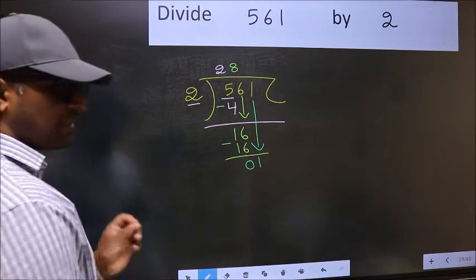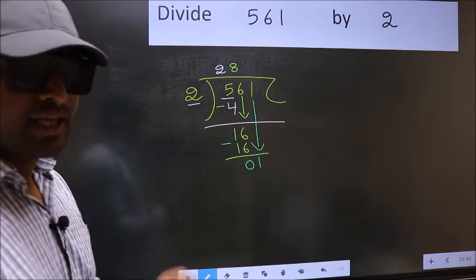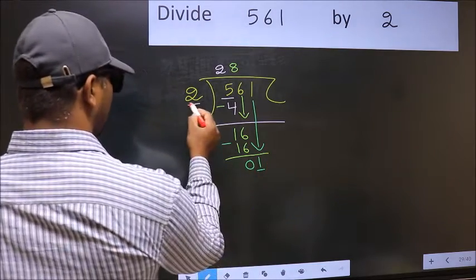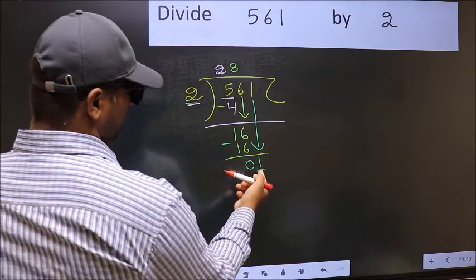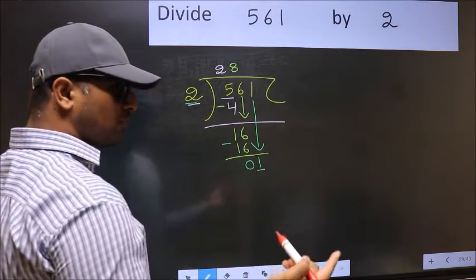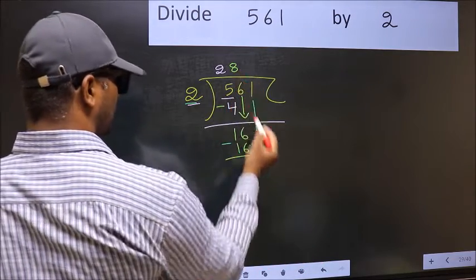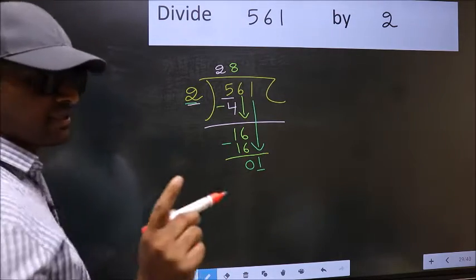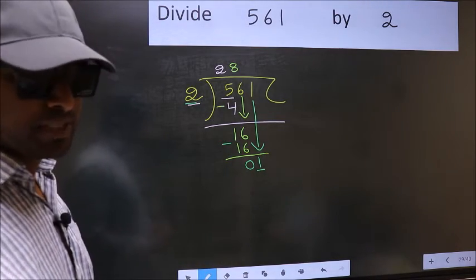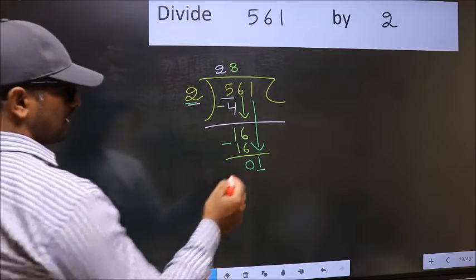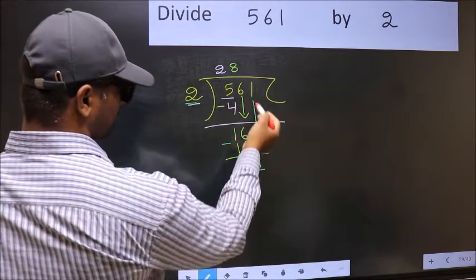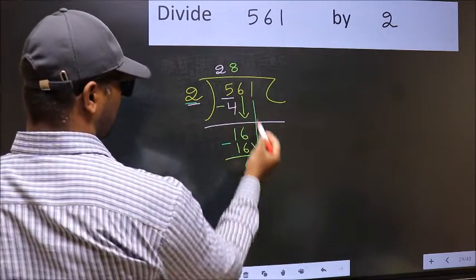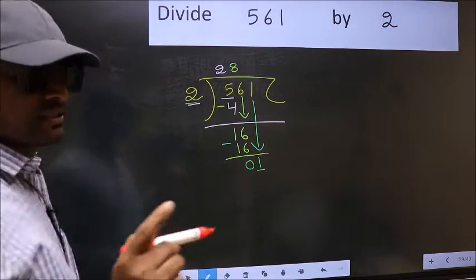After this step, the mistake happens and the mistake is this. Here we have 1 and here 2. 1 is smaller than 2. So what many do is they directly put a dot and take 0 which is wrong. Why is it wrong? Because just now you brought this number down and in the same step you want to put a dot and take 0 which is wrong.